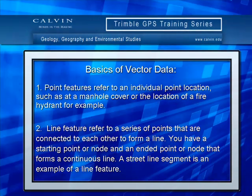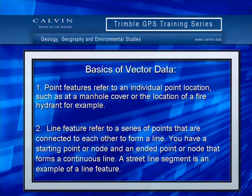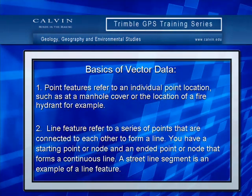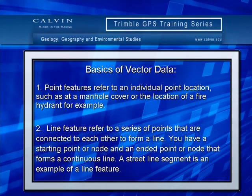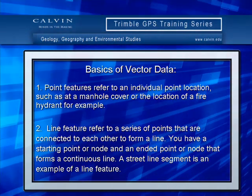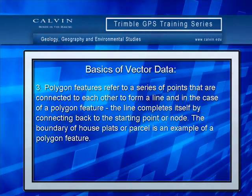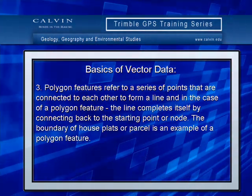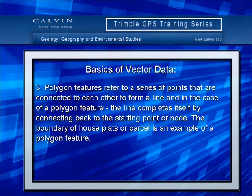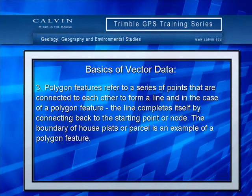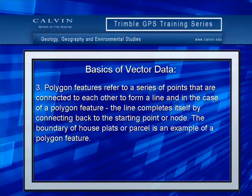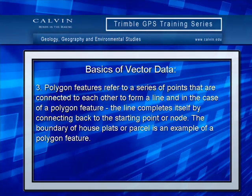Line features refer to a series of points that are connected to each other to form a line. You have a starting point or node and an ending point or node that form a continuous line. A street line segment is an example of a line feature. Polygon features refer to a series of points connected to form a line that completes itself by connecting back to the starting point or node. The boundary of house plats or parcels is an example of a polygon feature.